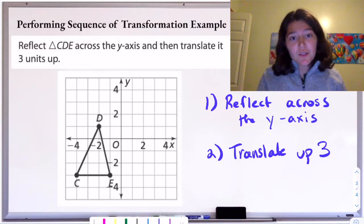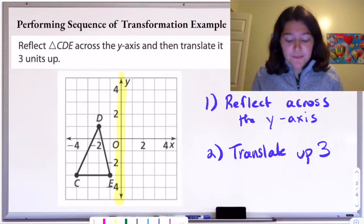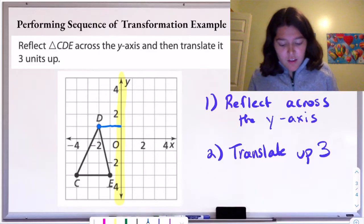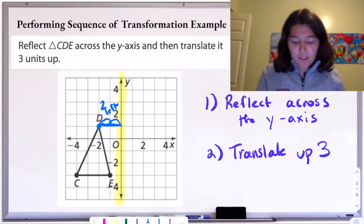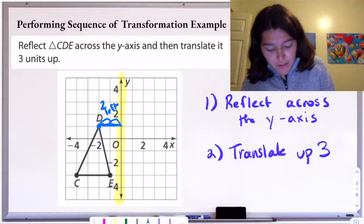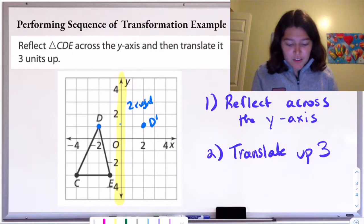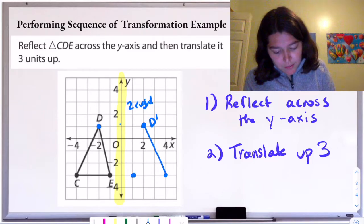Let's quickly remind ourselves how we do these individually. First we need to reflect our shape across the y-axis — the y-axis is our vertical axis. To reflect, we're going to find the distance that our shape is away from our line of reflection, and then go the same distance but in the opposite direction. To get from my line of reflection to D, I'm going two units left. So to find D prime, I'm going to go the same distance, two units, but to the right. So this will be my D prime.